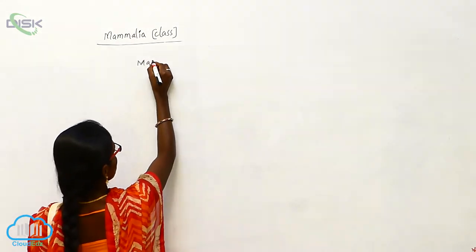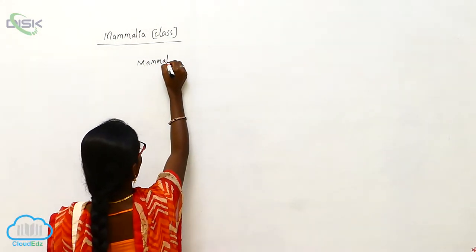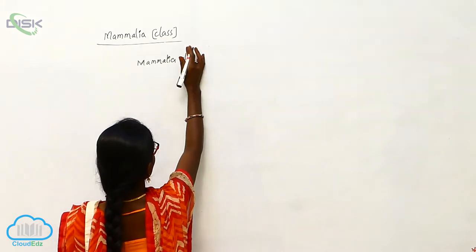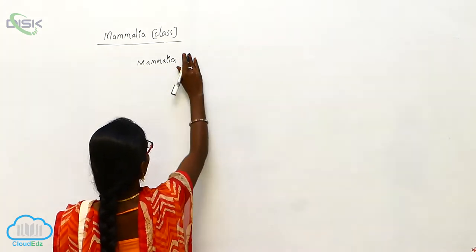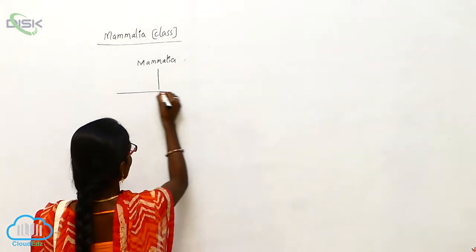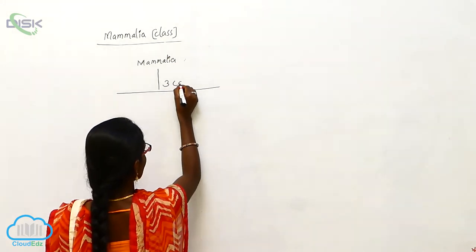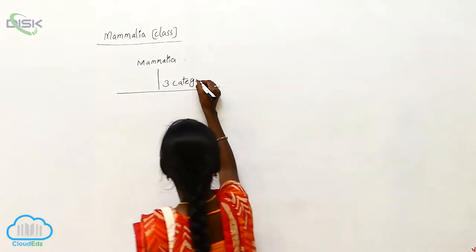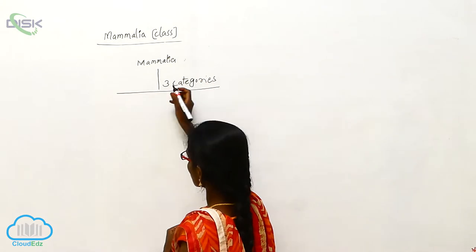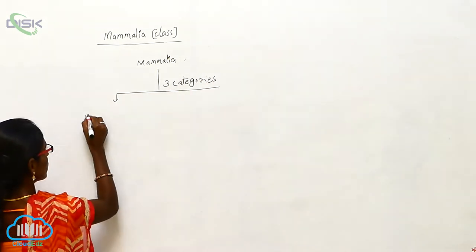Mammalia is classified and divided into three categories. The first one is